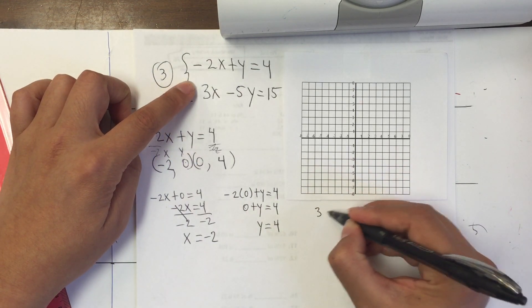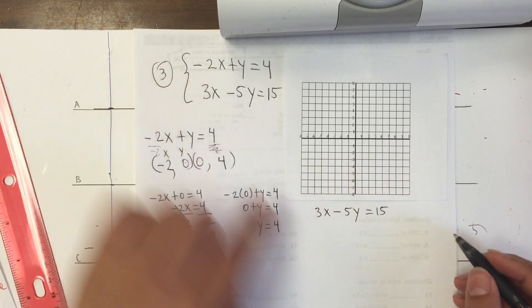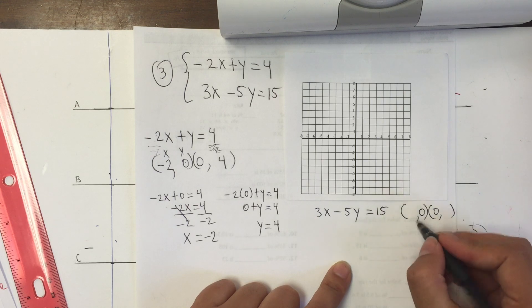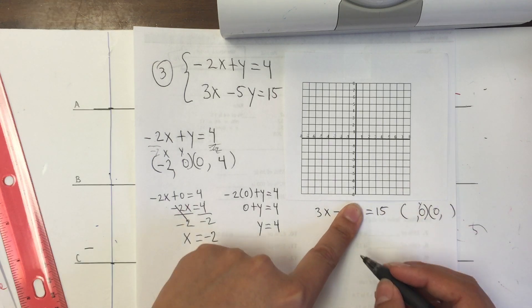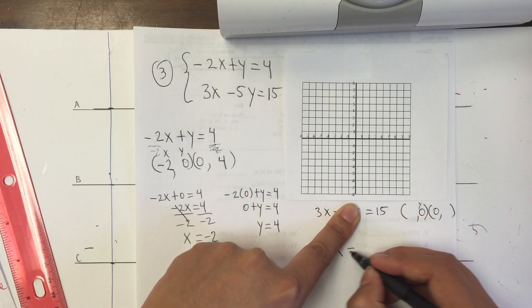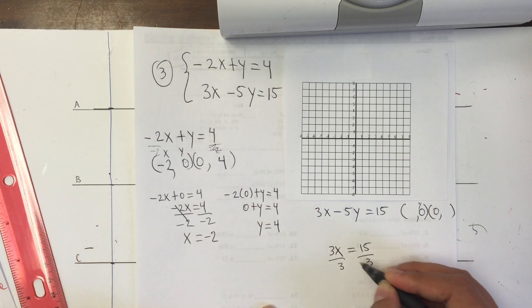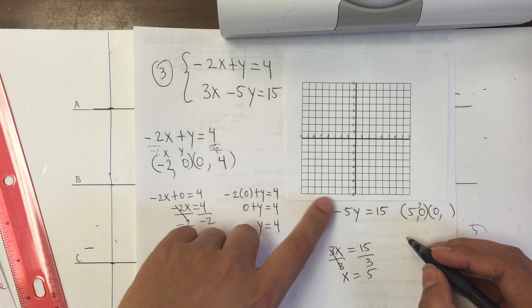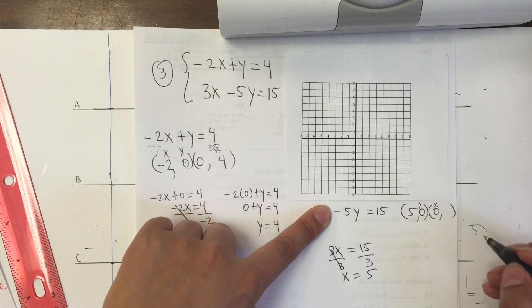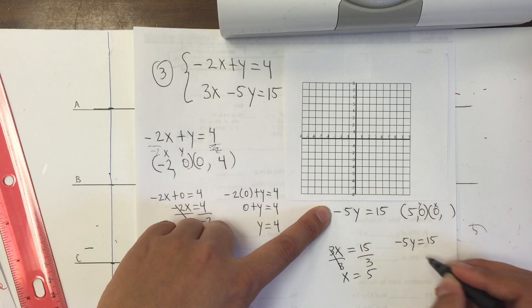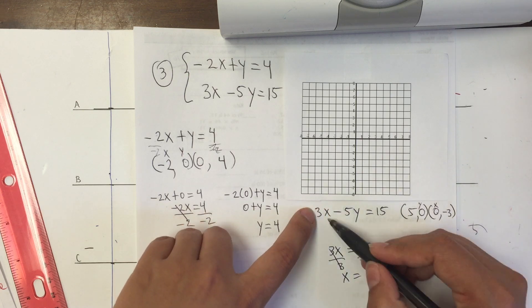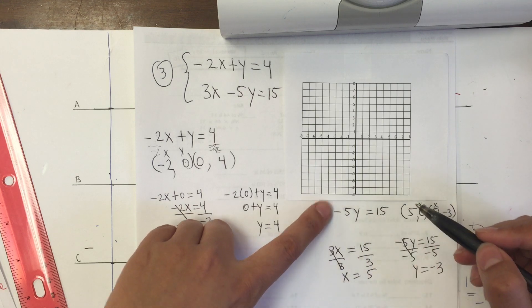For 3x minus 5y equals 15: if y is 0, replace with 0, and we end up with 3x equals 15. Divide both sides by 3, and x equals 5. Then x is 0, so that disappears, and we have negative 5y equals 15. Divide both sides by negative 5, and y equals negative 3. The reason for covering the term is because replacing it with 0 makes it disappear anyway.